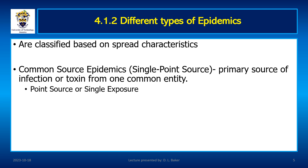The next subtype is continuous or multiple exposure epidemic. There is prolonged continuous exposure to the source of infection, and such epidemics will not cease unless the source is removed and all susceptible persons have developed immunity. Contaminated water becomes a regular source of infection and the epidemic may continue until the water is treated and made safe. A classic example is the cholera epidemic investigated by John Snow in London.